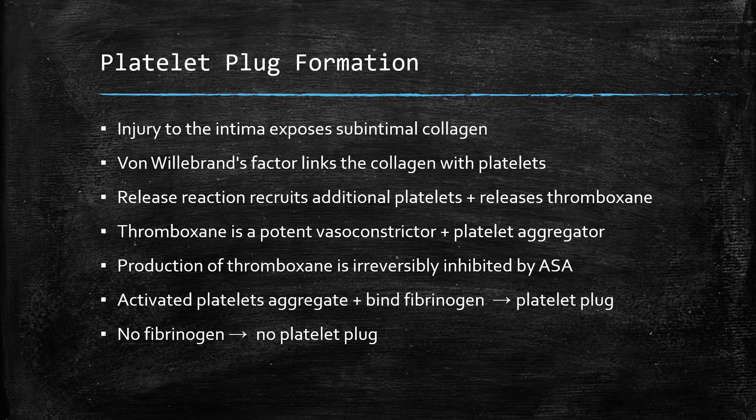The next step in hemostasis is the formation of a platelet plug. Injury to the vessel intima will expose sub-intimal collagen. Platelets are unable to bind directly to collagen — they require the linkage protein von Willebrand's factor. Von Willebrand's factor binds to collagen, and the platelets then bind to von Willebrand's factor. Platelets contain numerous secretory granules that secrete multiple vasoactive substances. As platelets aggregate, a release reaction occurs, largely under the influence of ATP and serotonin, recruiting additional platelets to the area. One very important substance released is thromboxane — a very potent vasoconstrictor and platelet aggregator.